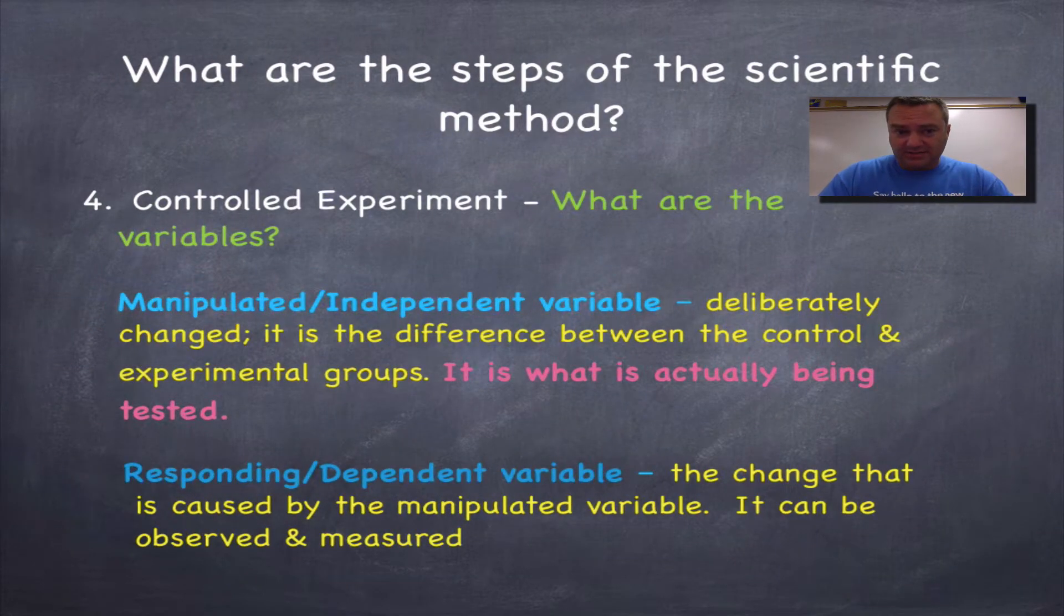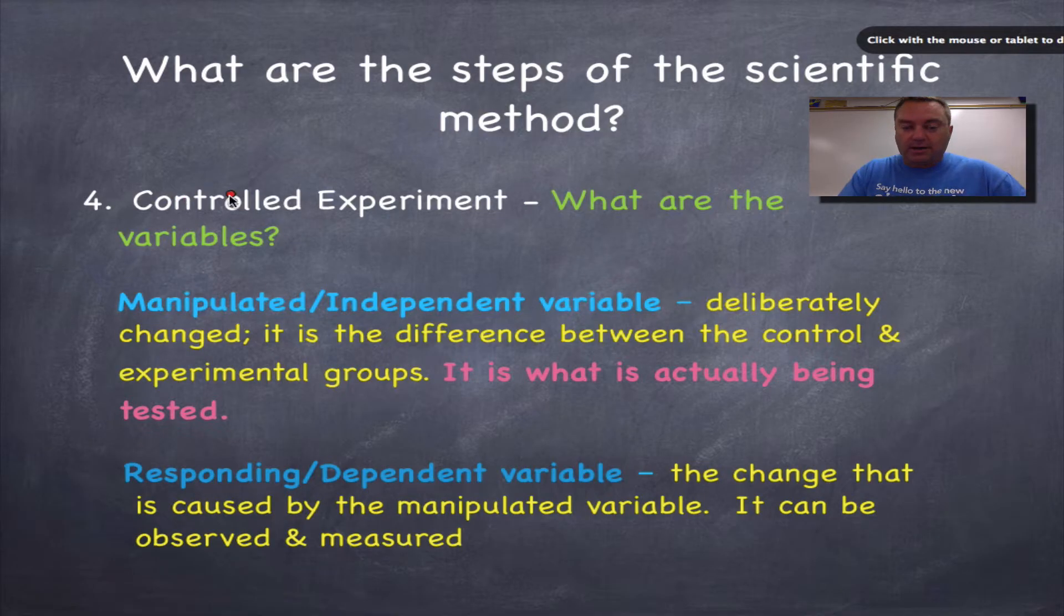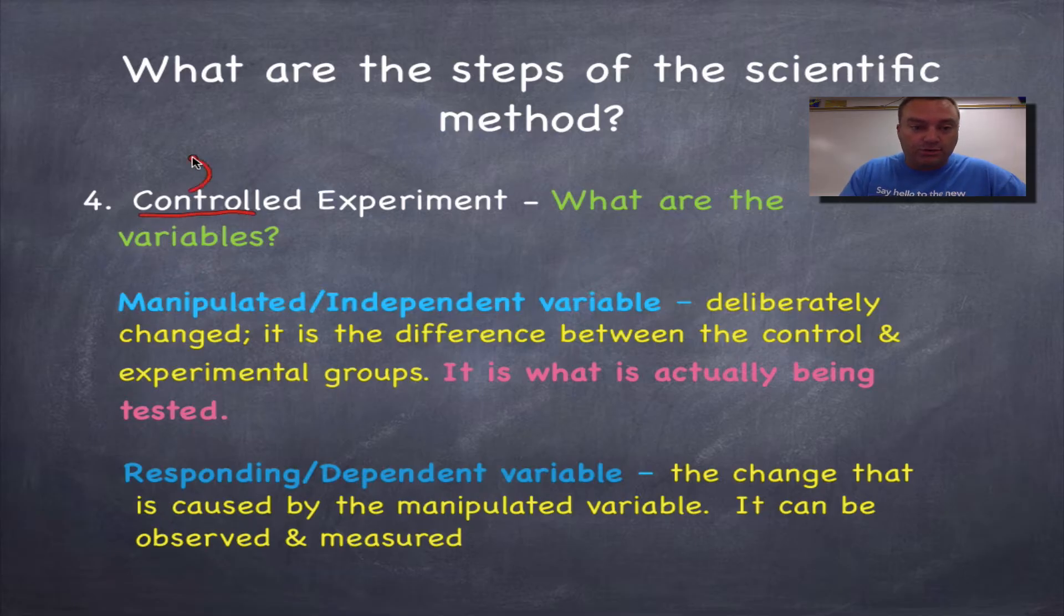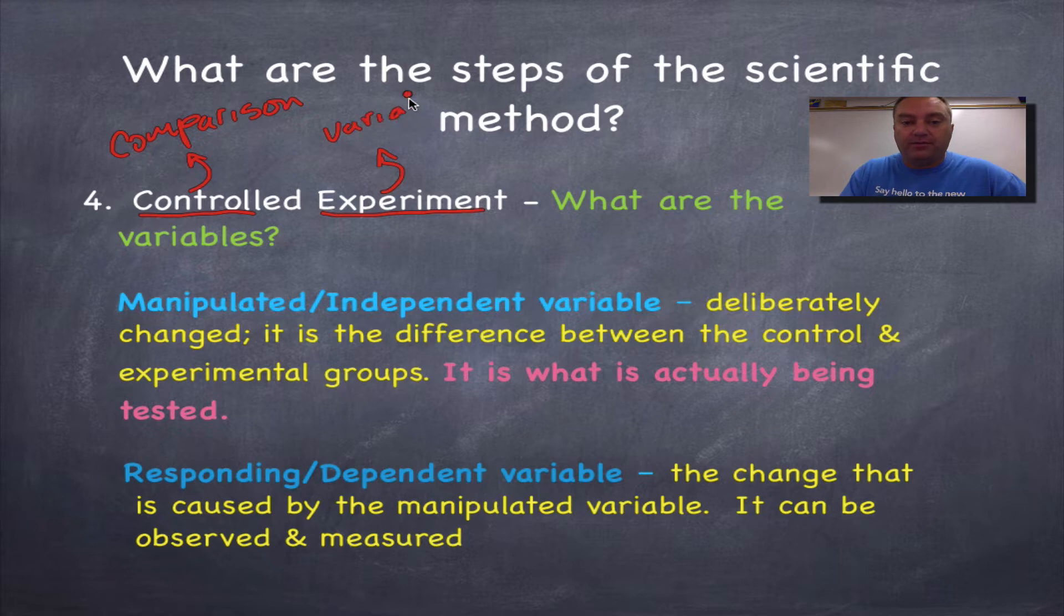Now a couple of highlights from the scientific method. In a controlled experiment, one of the great ways to remember the two groups in a controlled experiment is just look at the word controlled experiment. The control, that's used for comparison. There's no variables whatsoever. And then the next one is the experimental group. And that's the one that will have the variable, the variable that's being tested and the one that creates the data.